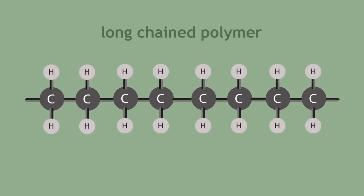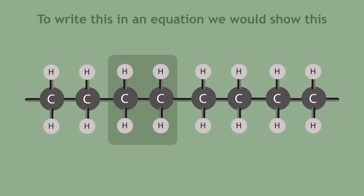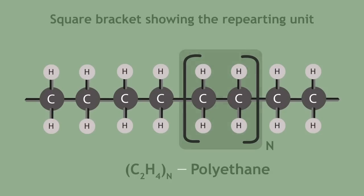The remaining molecules attach in series to form a long-chained polymer. To write this in equation, we would show this, where n represents a large number of molecules, and the square bracket shows the repeating unit.